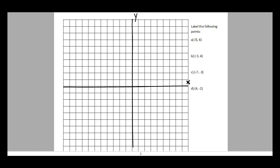Different coordinate planes can have different scales. For our coordinate plane, each box is worth one. Going along the x-axis: one, two, three, four, five, and so on. Going upwards on the y-axis: one, two, three, four, five. The central point in the middle is the origin — I'll put a little zero there to mark it.